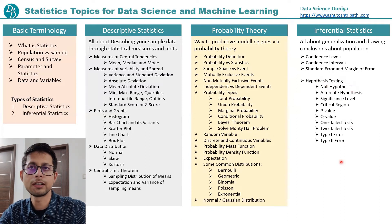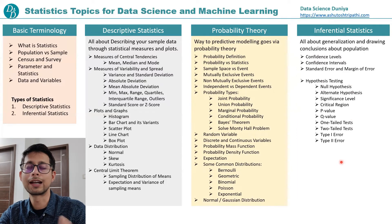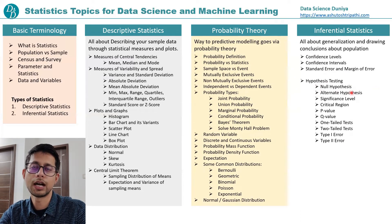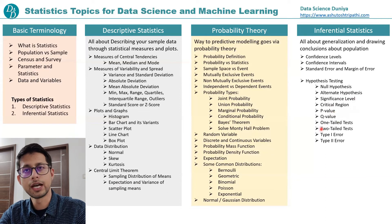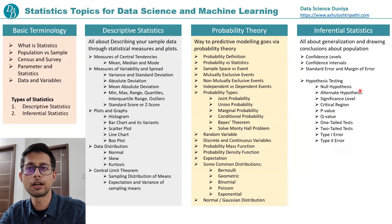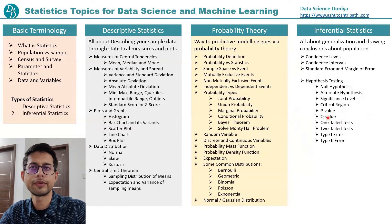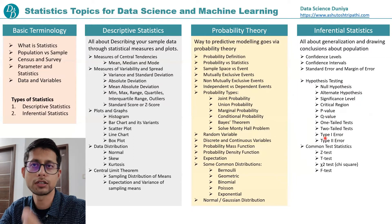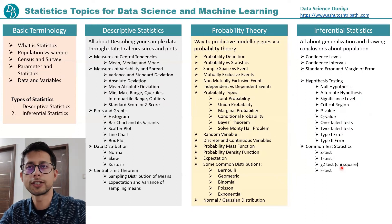The next important topic is hypothesis testing, which tries to validate claims. Under hypothesis testing we have two types: null hypothesis and alternate hypothesis. Related concepts include significance level, critical region, p-value, q-value, one-tailed test, two-tailed test, and type 1 and type 2 errors. Many interview questions are framed from these topics, such as what is p-value and what do you understand by critical values.